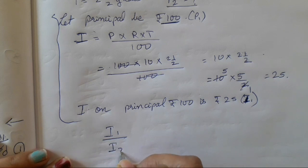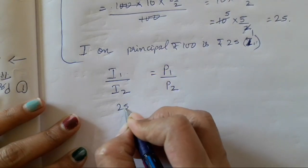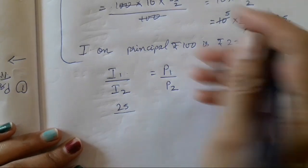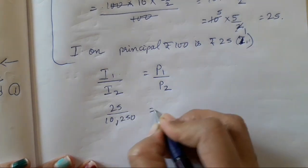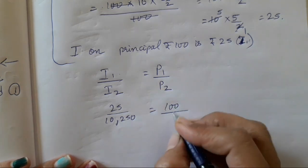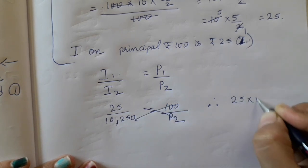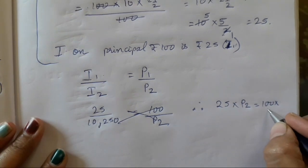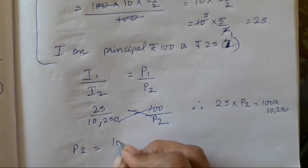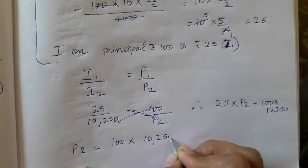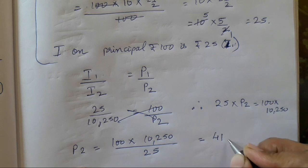Now, I₁ upon I₂ is equal to P₁ upon P₂. I₁ is 25, I₂ is 10,250, P₁ is 100, and P₂ we need to find. After cross multiplying, you get 25 into P₂ is equal to 100 into 10,250. Therefore P₂ is equal to 100 into 10,250 upon 25. When you solve this operation you are going to get the answer as 41,000.